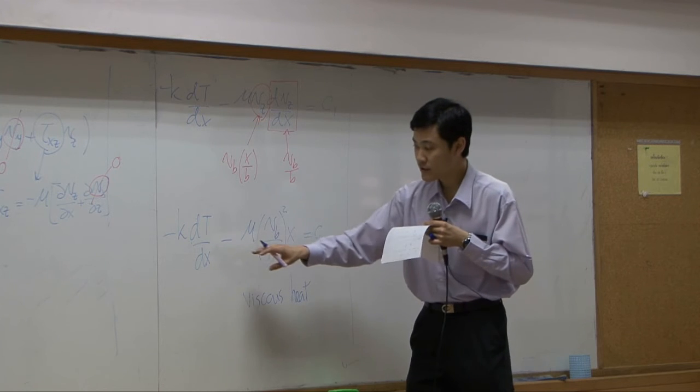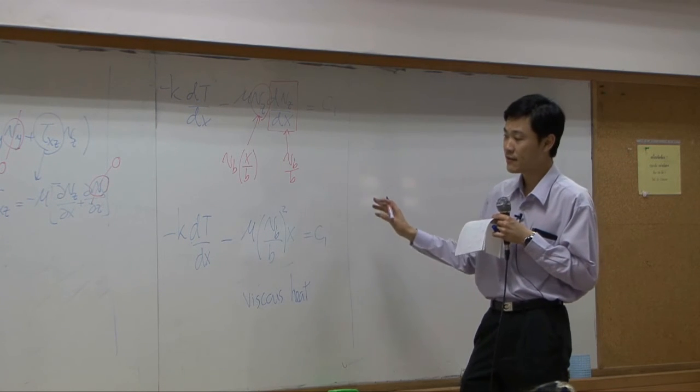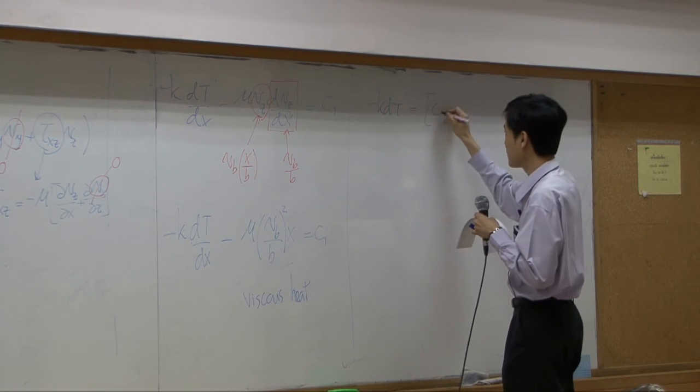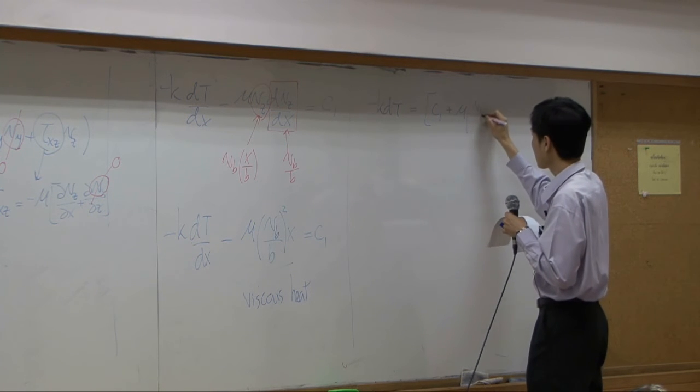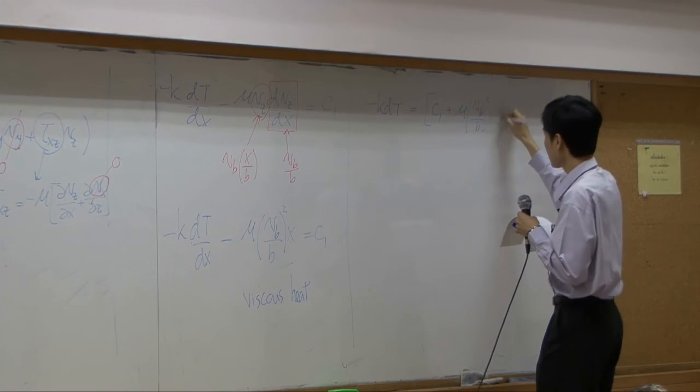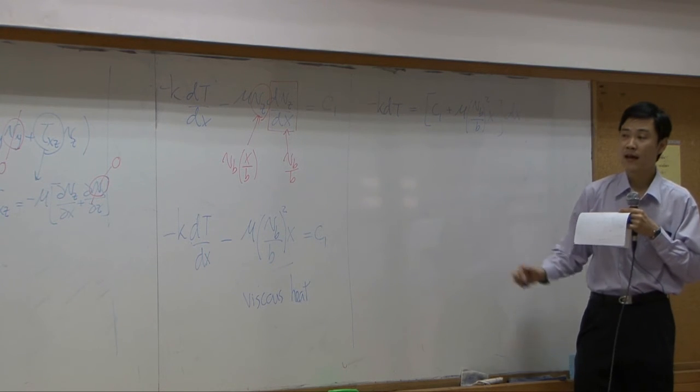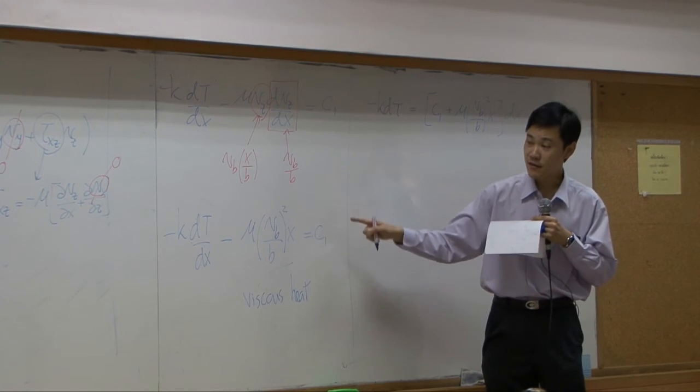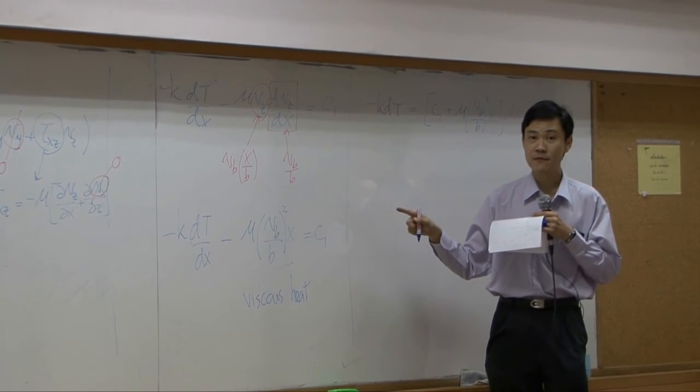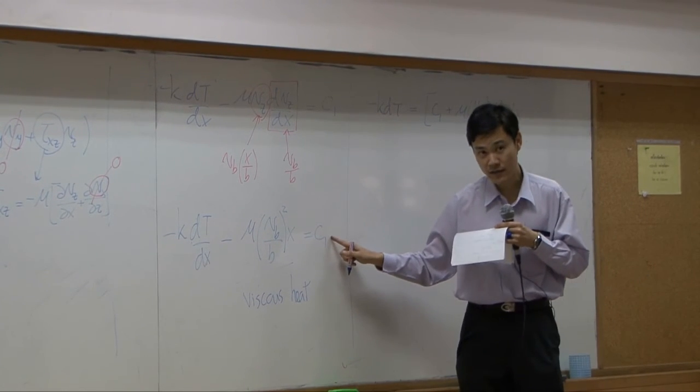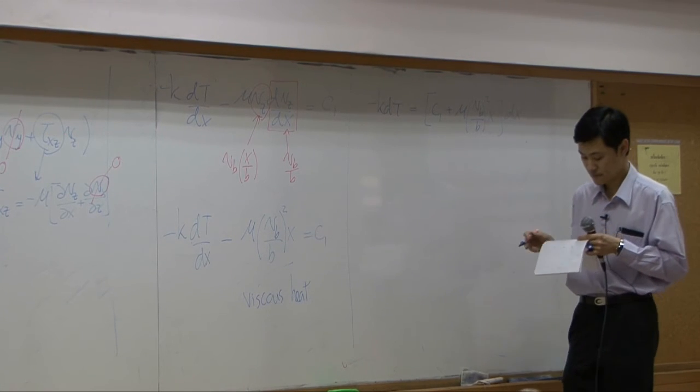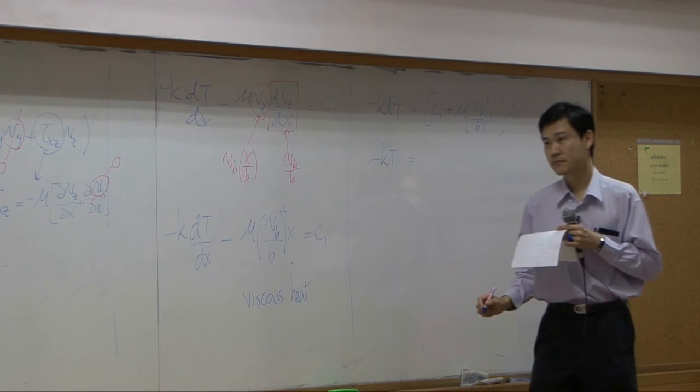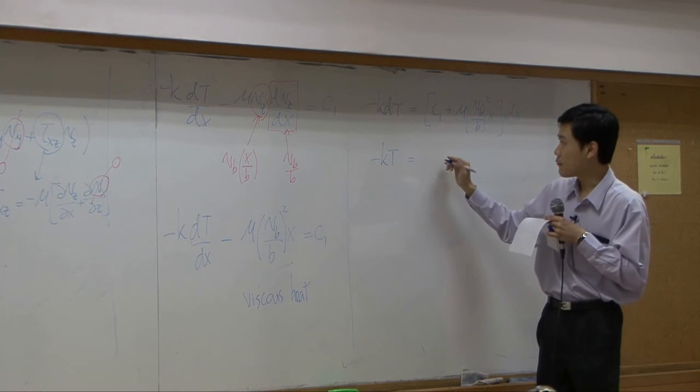So from here, I'm going to take x to the right hand side, and t on the left hand side. I'm going to keep c1 here. Because there is no way we can solve for c1. There are too many variables. We do not have enough boundary condition to fix c1 at this stage. So we must move on. If you integrate it, on the right hand side, you have c1x.